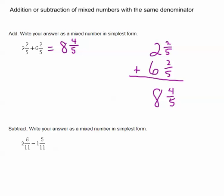Looking at our second example, remembering to subtract, 2 and 6 11ths minus 1 and 5 11ths. So subtracting our whole numbers, 2 minus 1 is 1.